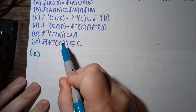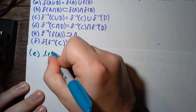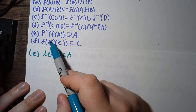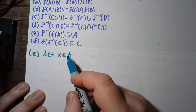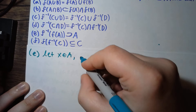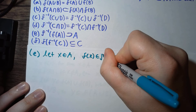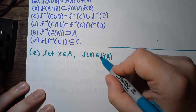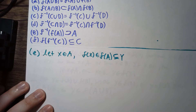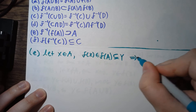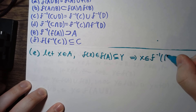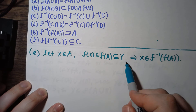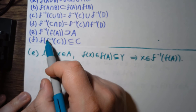For part e, A is a subset of X. Say that we have some element x in A. We want to show that x is an element of f inverse of f of A. We know that f of x is an element of f of A, just by definition. And then since f of x is an element of f of A, which is a subset of Y, we can look at the pre-image of f of A. Since f of x is in here, this implies that x is an element of the pre-image of f of A, just by definition. This is exactly the subset equation we wanted to show.